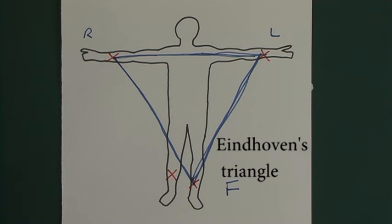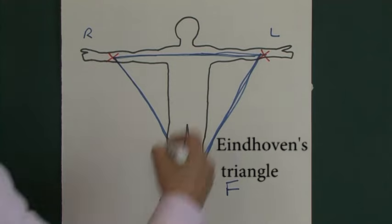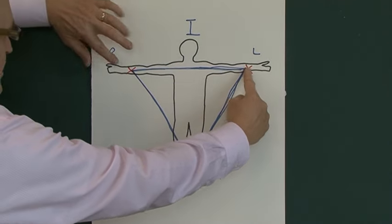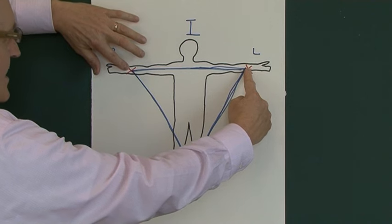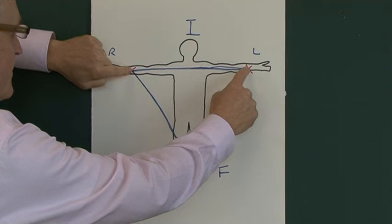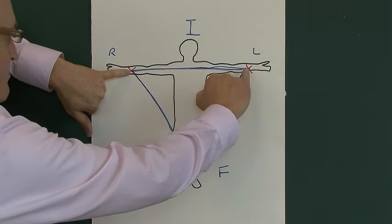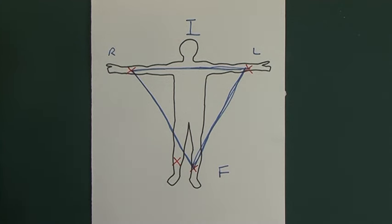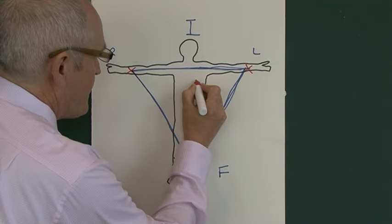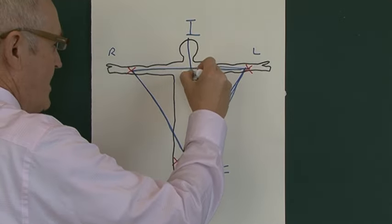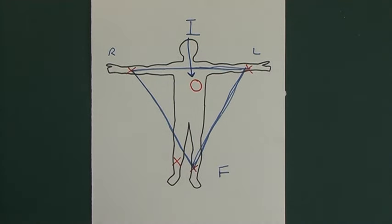The first lead on the 12-lead ECG is lead one. What the ECG machine does is very clever - it takes part of the information picked up from the right arm, part of the information picked up from the left arm, and cleverly and electrically combines it into one view. So lead one is called a dipolar lead - there are two poles. The machine splices this information together and gives us lead one, which is essentially looking at the heart from on top.